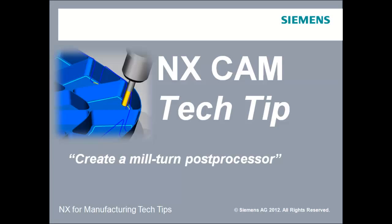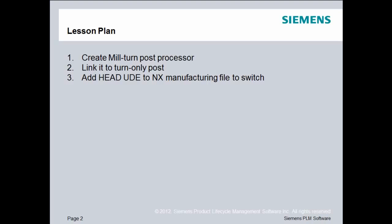Hi, this is Jim Wright, and in this PostBuilder lesson, you will learn how to create a mill-turned post. Our lesson plan is to create a mill-turned post processor. We will then link it to a turning post that we have already created. Finally, we'll add the head user-defined event to the NX manufacturing file so that NX knows when to switch back and forth between the different post processors that we've linked together.